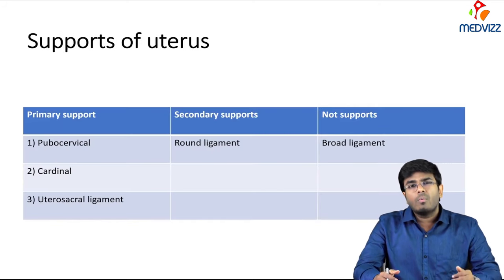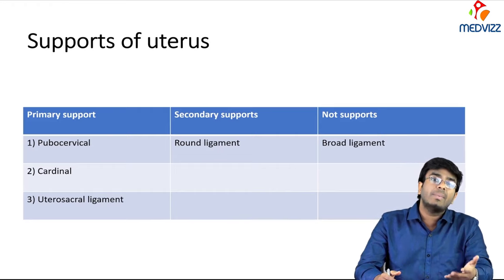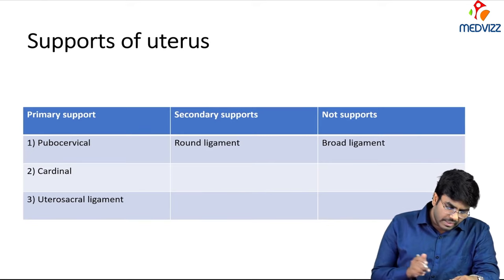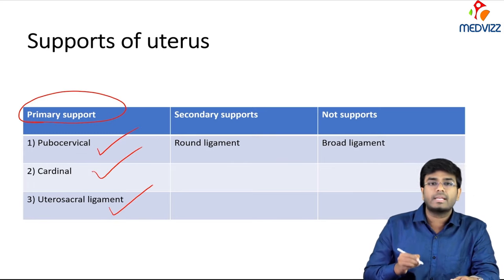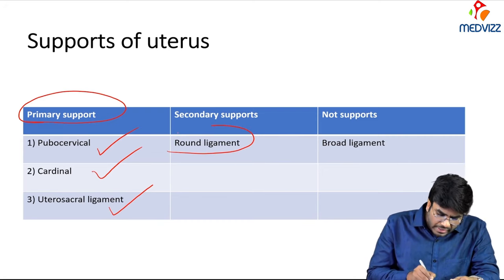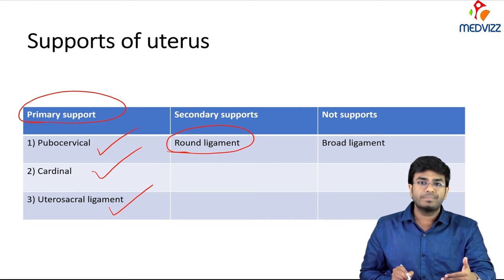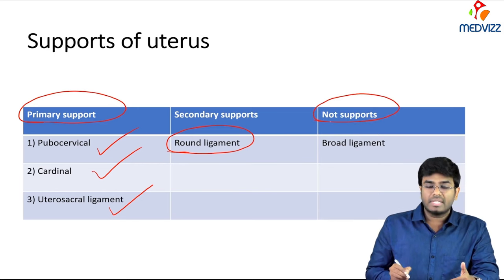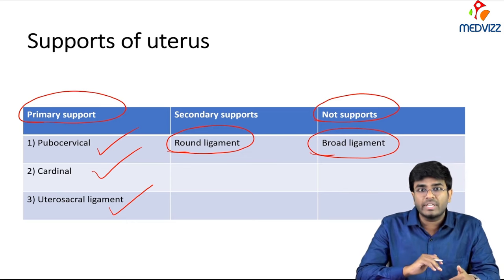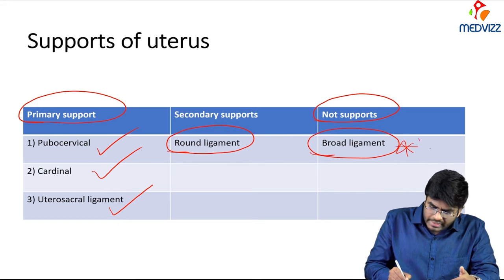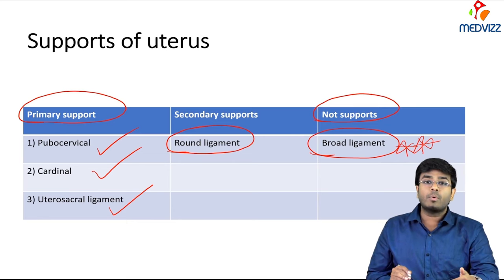The primary supports are the three ligaments: pubocervical, cardinal, and uterosacral. The secondary support is the round ligament, which keeps the uterus antiverted and antiflexed. The broad ligament is not a support at all — it is a misnomer; it is a double-folded peritoneum and does not support the uterus. So broad ligament is not at all a ligament.